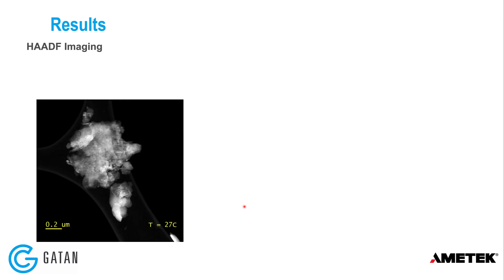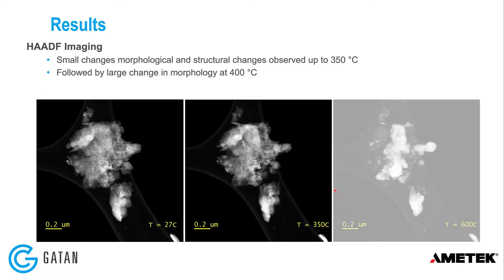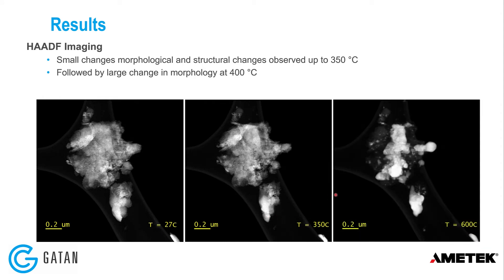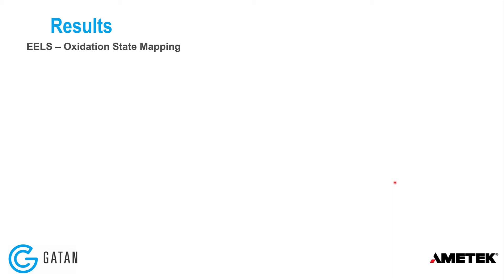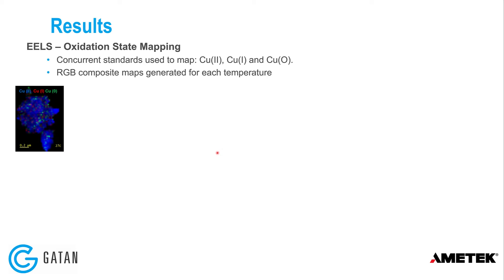Looking at the imaging results, HAADF imaging showed small changes up to about 350 Celsius, but a large morphological change at 400 degrees Celsius. Moving to the EELS data and oxidation state mapping, concurrent standards are used to map copper(II), copper(I), and copper(0). RGB composite maps are generated for each temperature: blue for copper(II), red for copper(I), and green for copper(0), all overlaid.